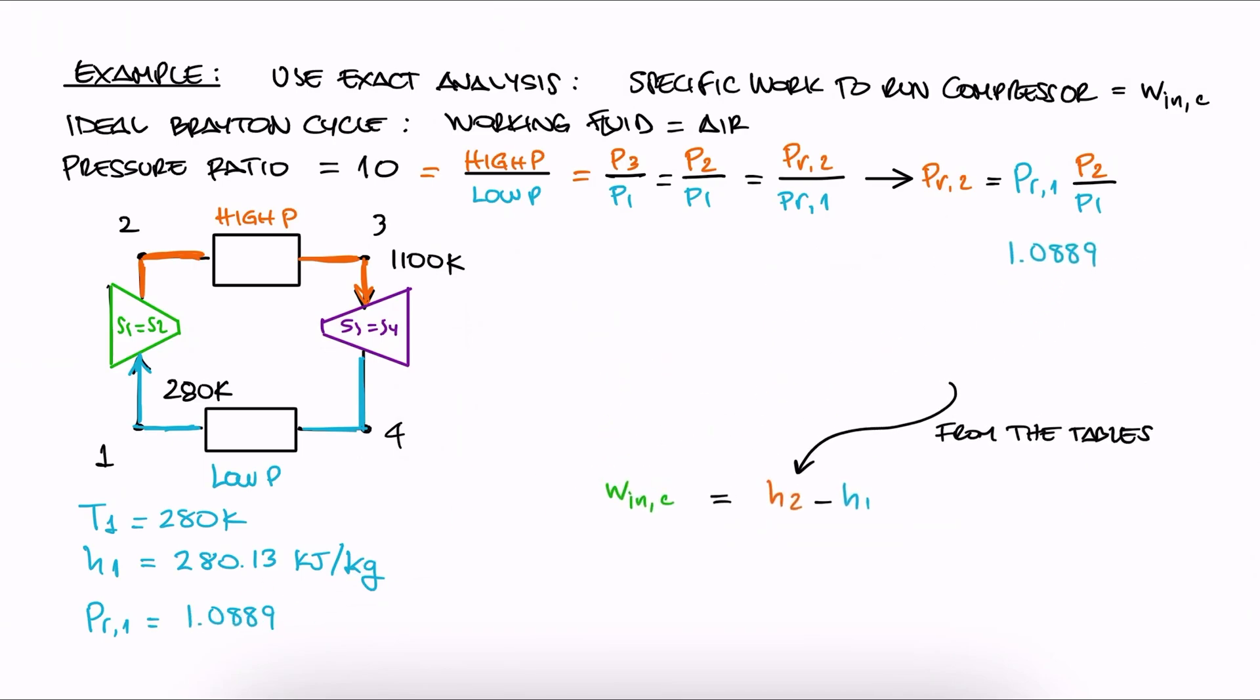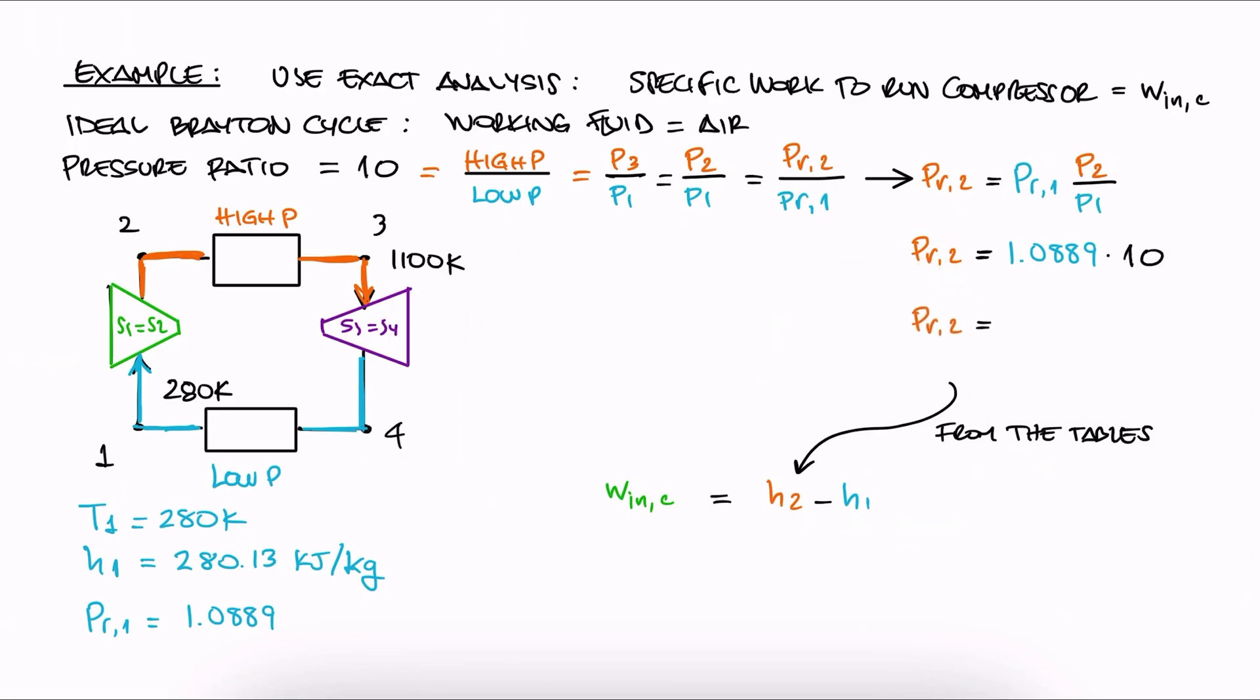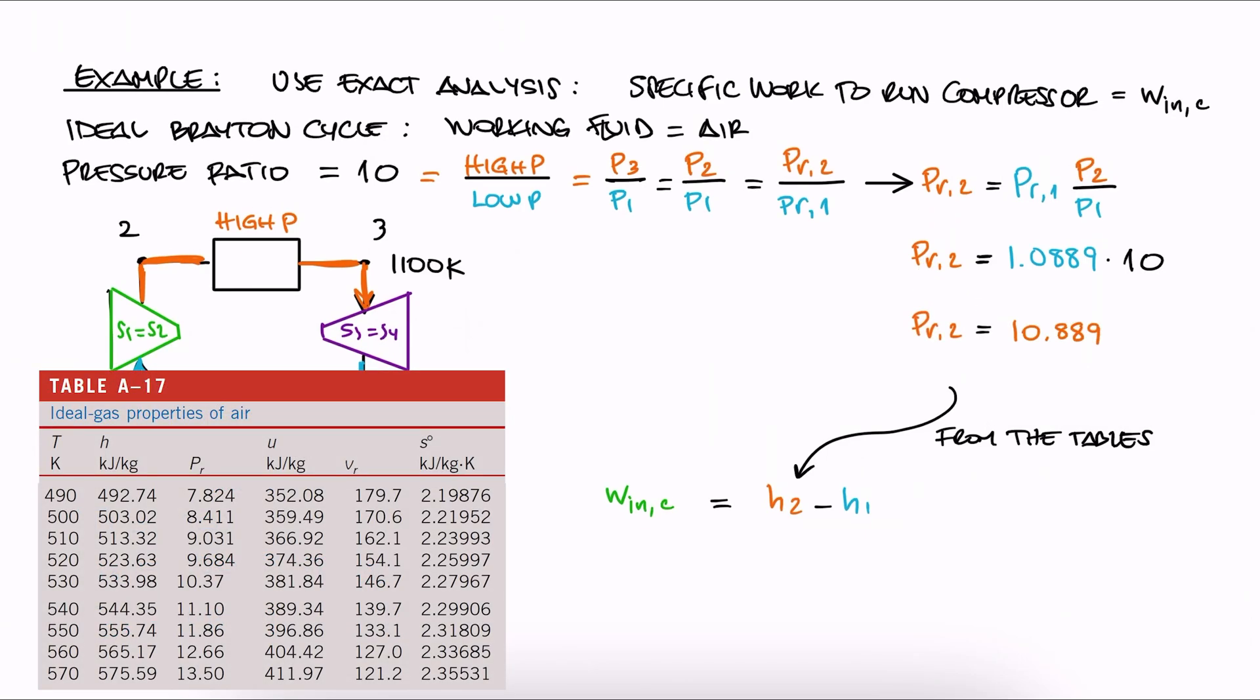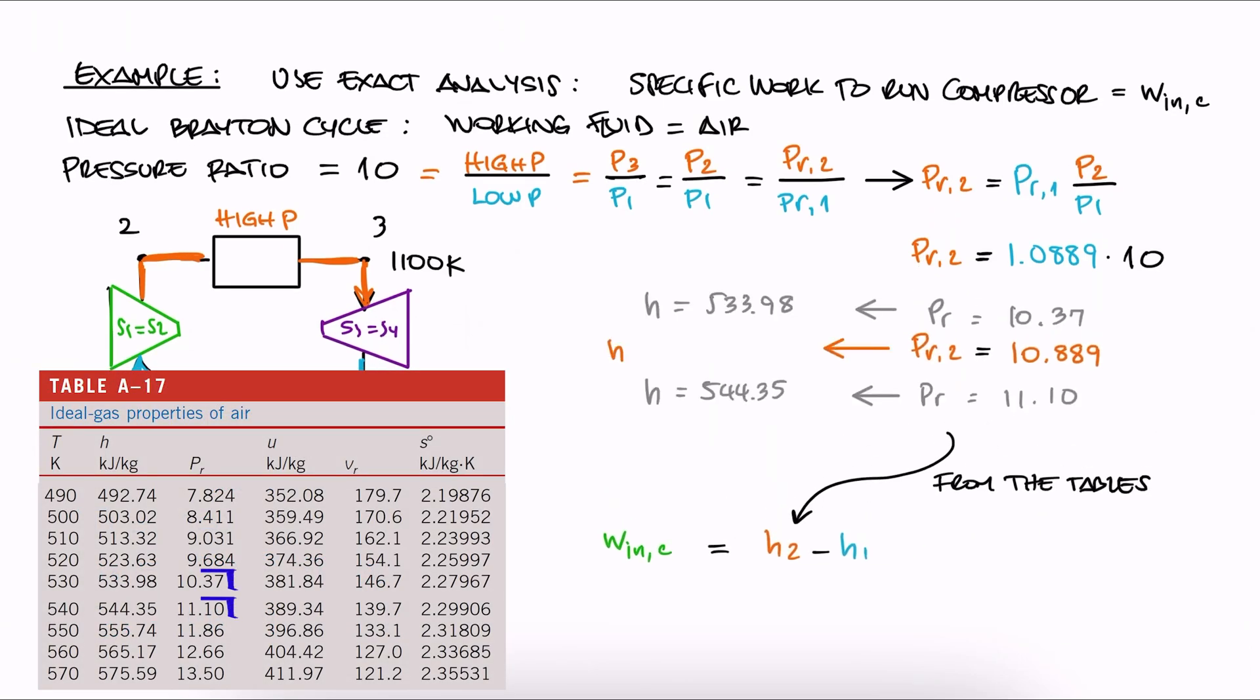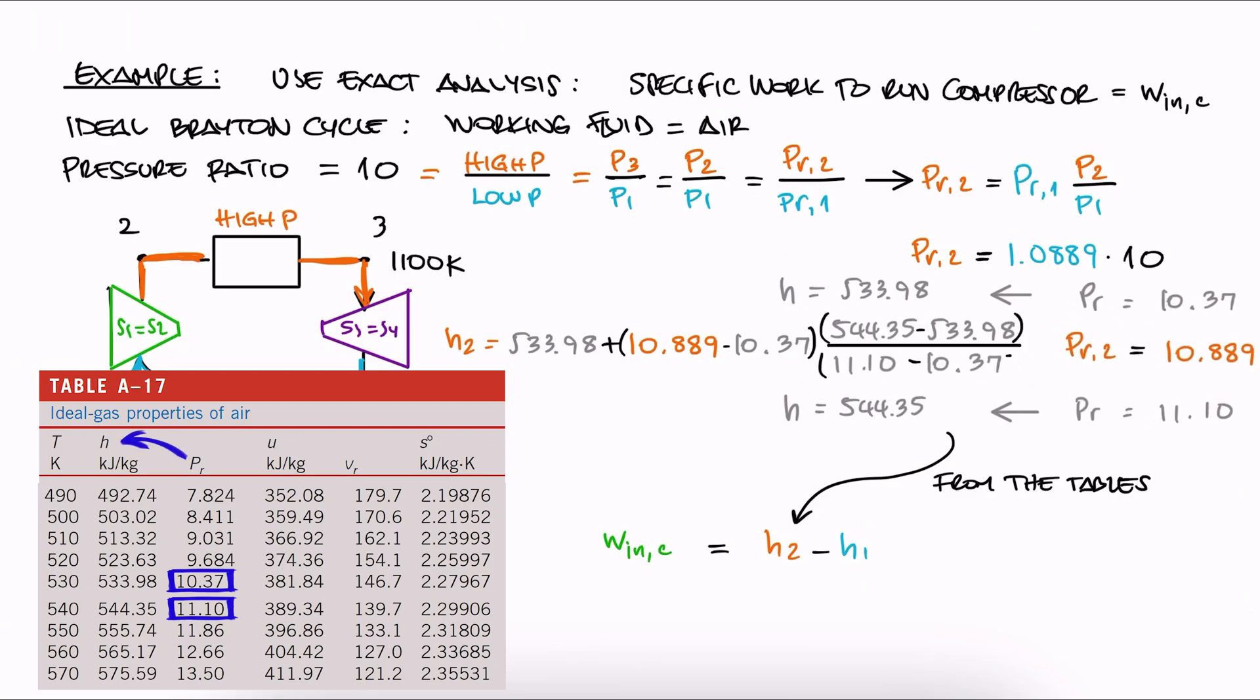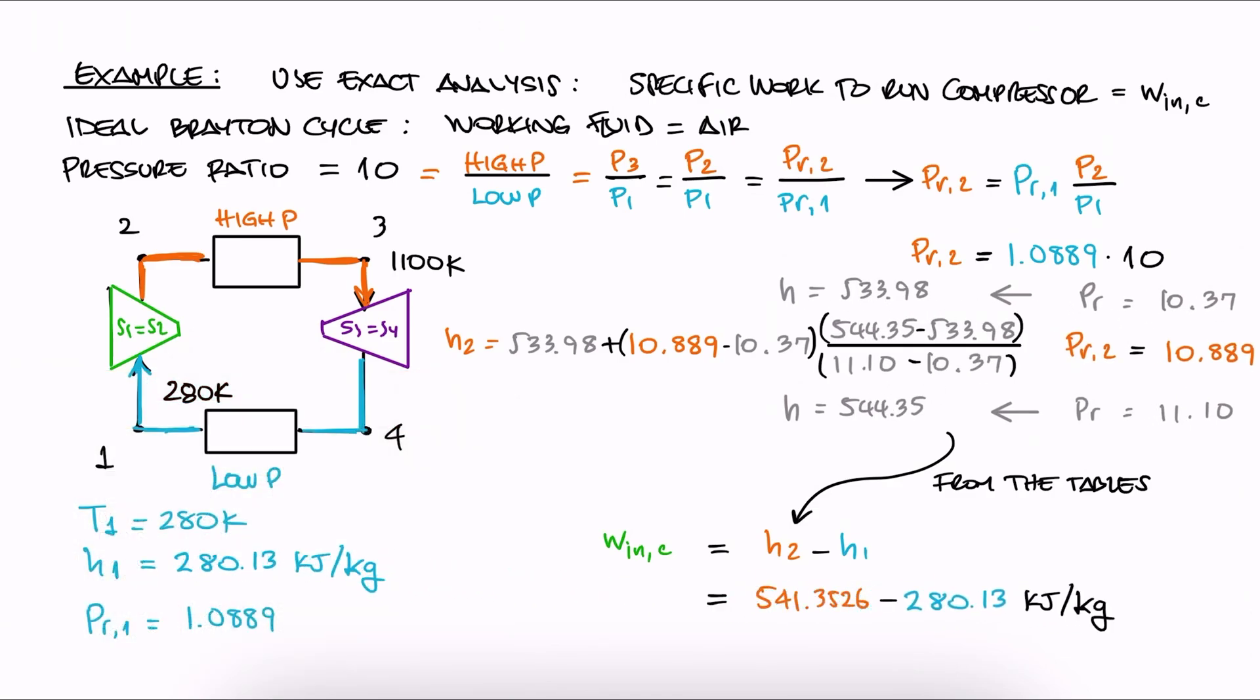We substitute the values for the ratio and PR1 to find PR2, and from the tables, we interpolate between these two values to obtain h2. We substitute h1 and h2, and find that the specific work to run the compressor is 261 kilojoules per kilogram.